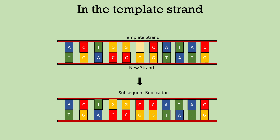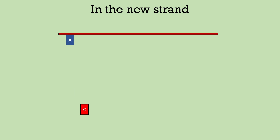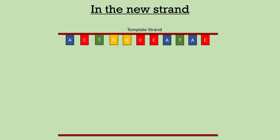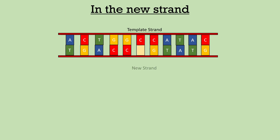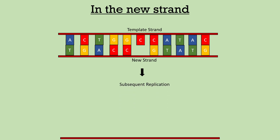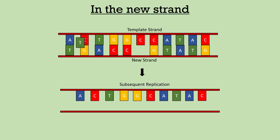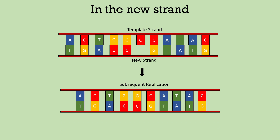When the intercalating agent gets inserted in the new strand and the DNA is replicated, after the intercalating agent is lost, we can see that there is a deletion of the base pair, thus creating a frameshift mutation. This can all be reverted back by a second treatment of intercalating agent in the new strand.